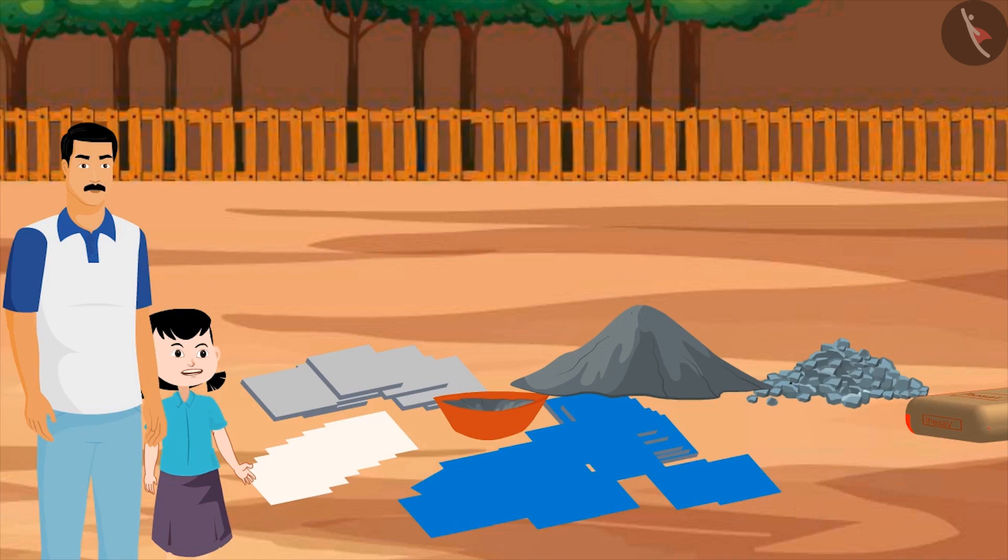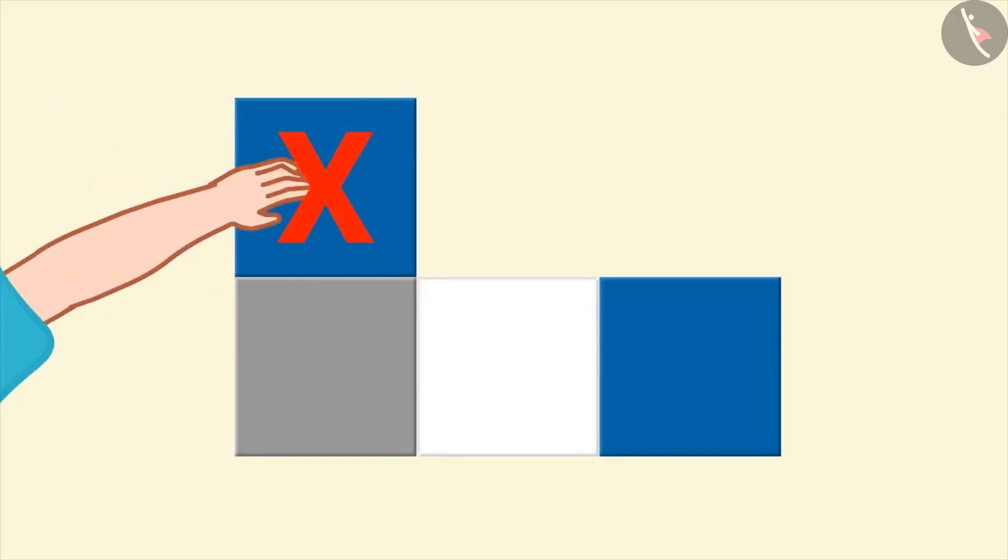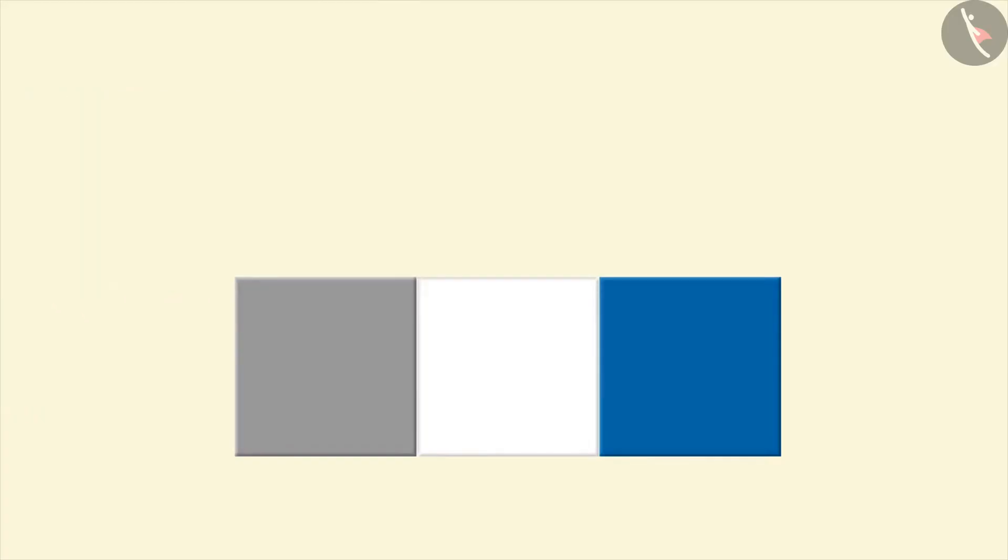Okay, uncle. Now, can I put the tile? Yes, of course. No, not like this. The order of placing tiles over here is grey, then white, then blue.